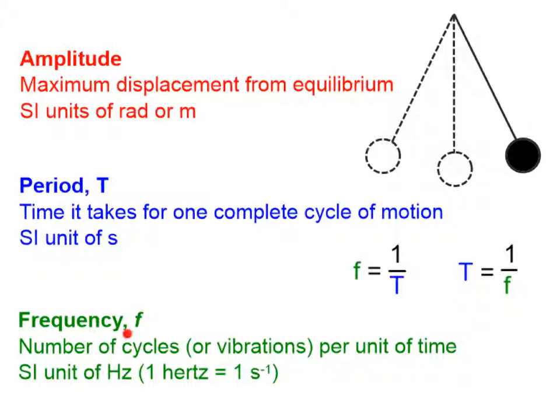Frequency on the other hand we designate with a lowercase f. Frequency is the number of cycles or vibrations per unit of time and that SI unit is hertz. One hertz is a second to the negative one or an inverse second. Frequency is equal to one over the period and conversely the period equals one divided by the frequency. The two are inversely proportional to each other so you can always use this relationship in your calculations.